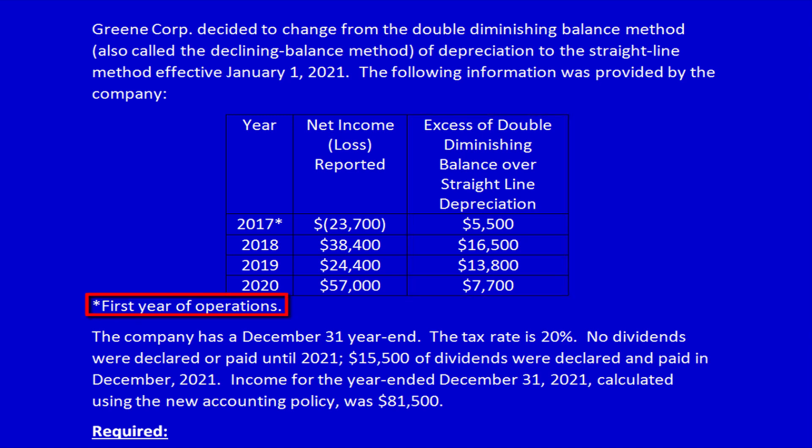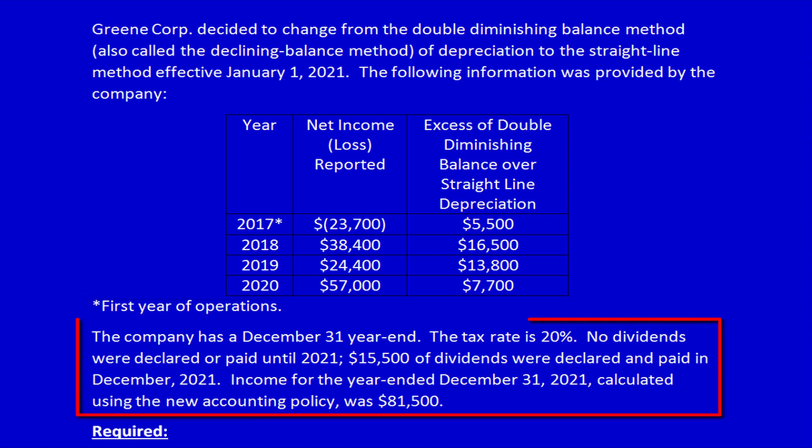Note that 2017 was their first year of operations. The company has a December 31st year end. The tax rate is 20% — we're assuming that the tax rate was 20% for all prior years as well as the current year. No dividends were declared or paid until 2021. $15,500 of dividends were declared and paid in December 2021. Income for the year ended December 31st, 2021, calculated using the new accounting policy — straight line — was $81,500.